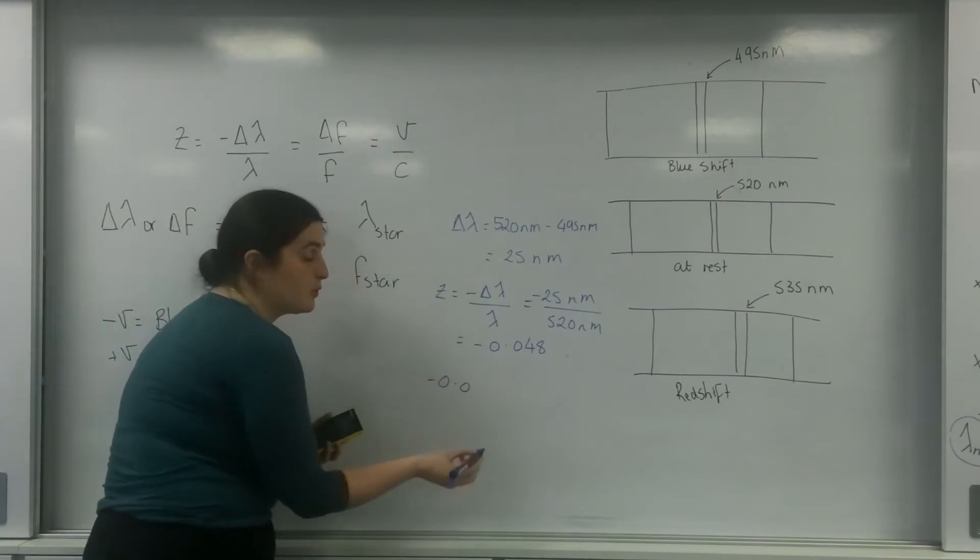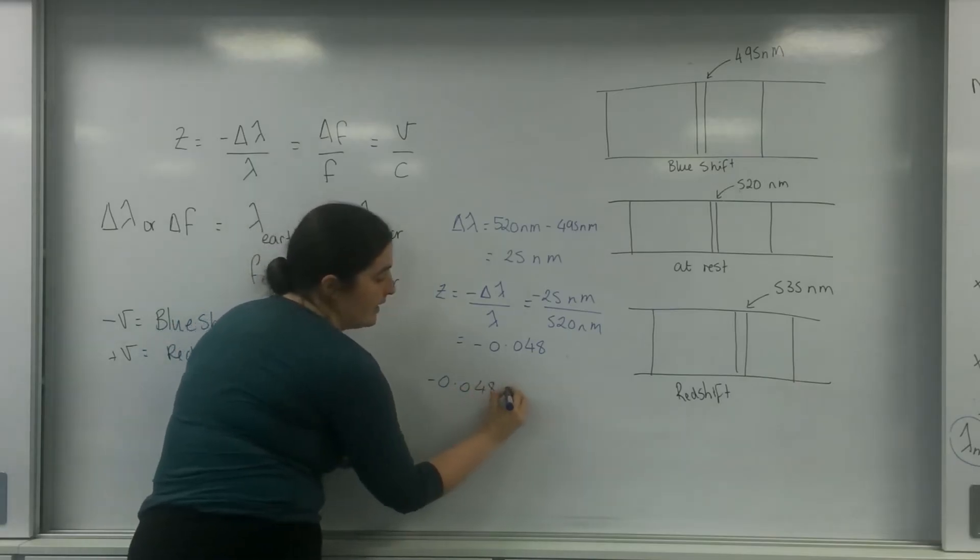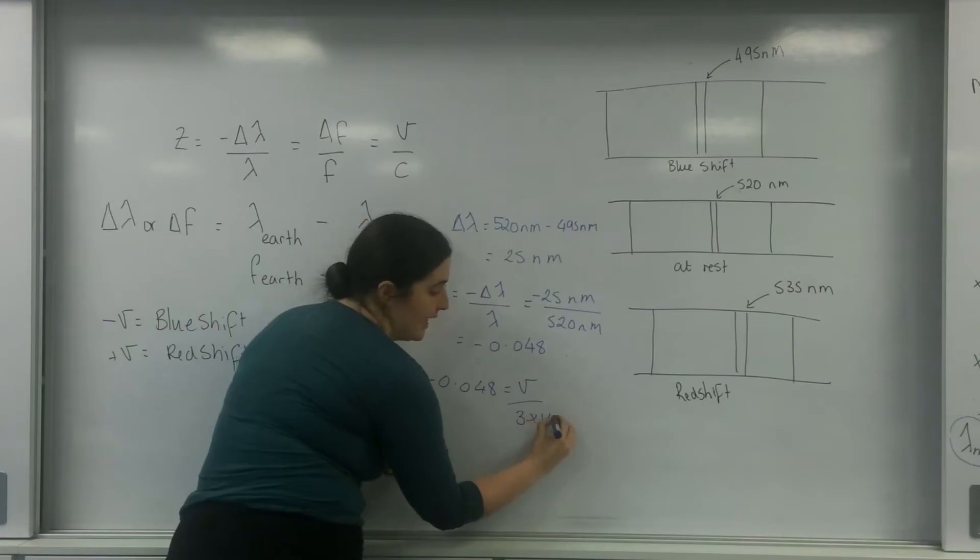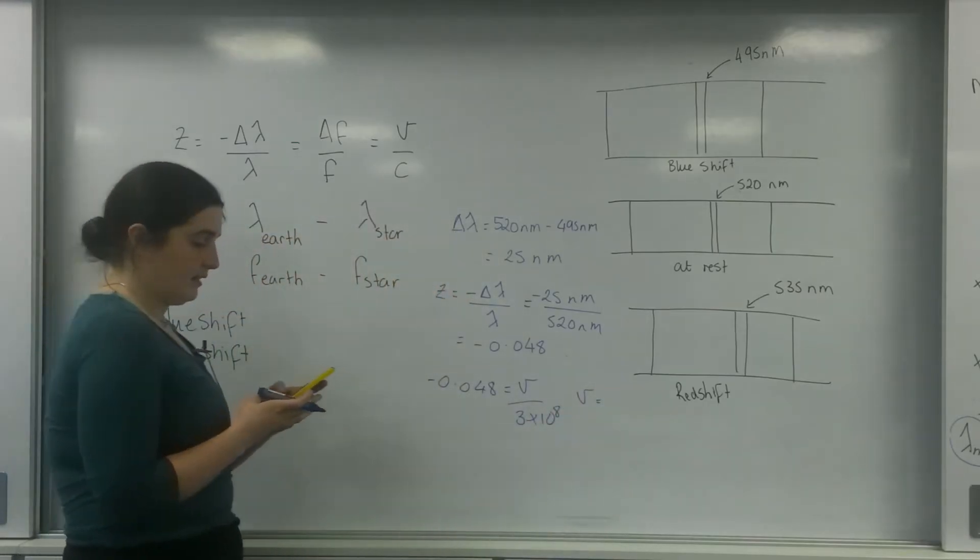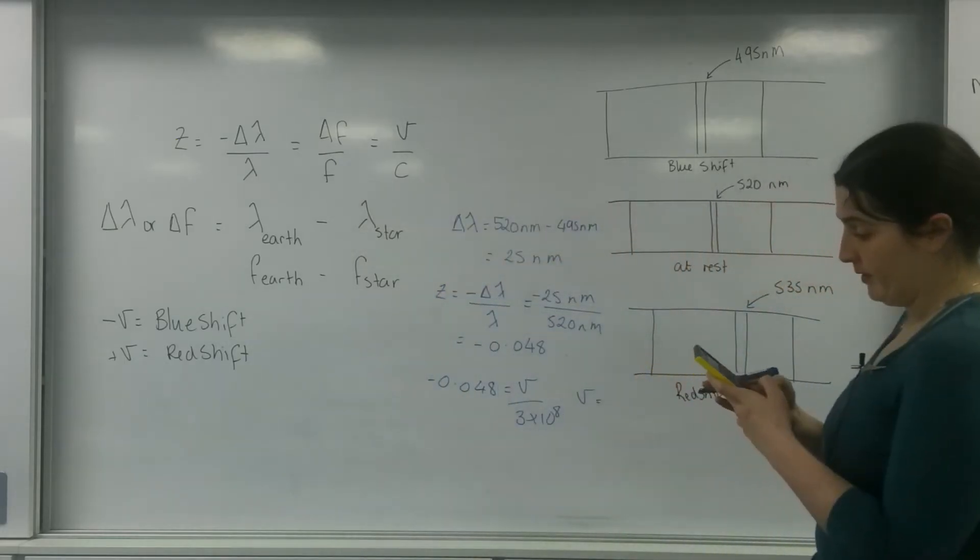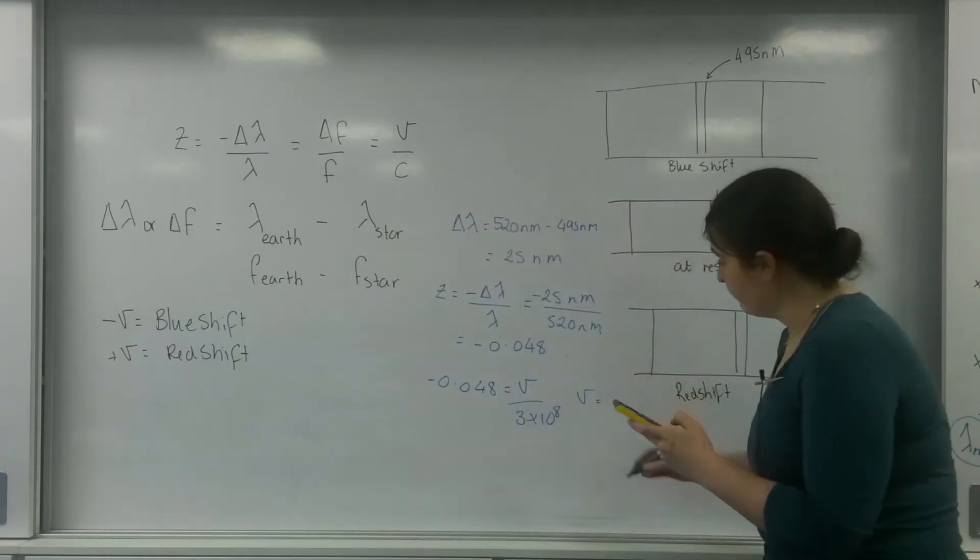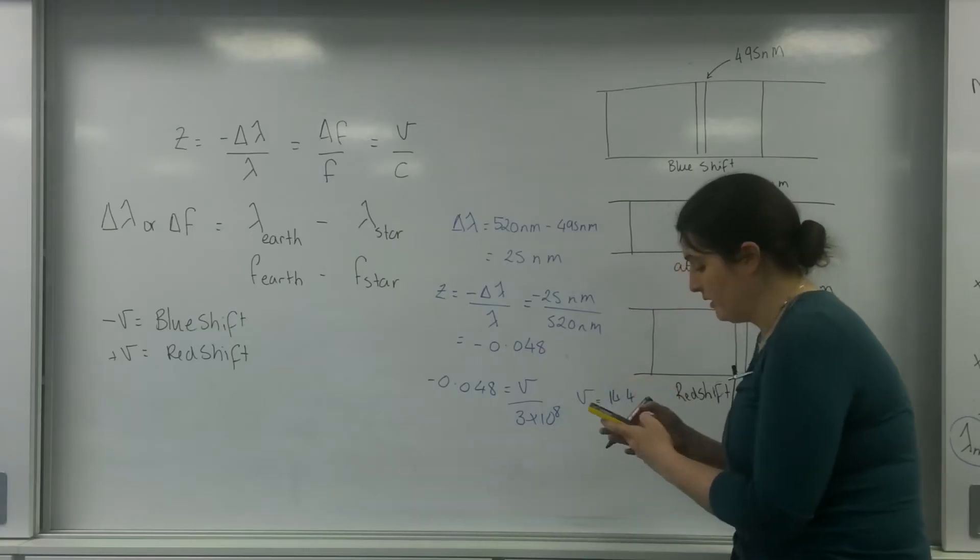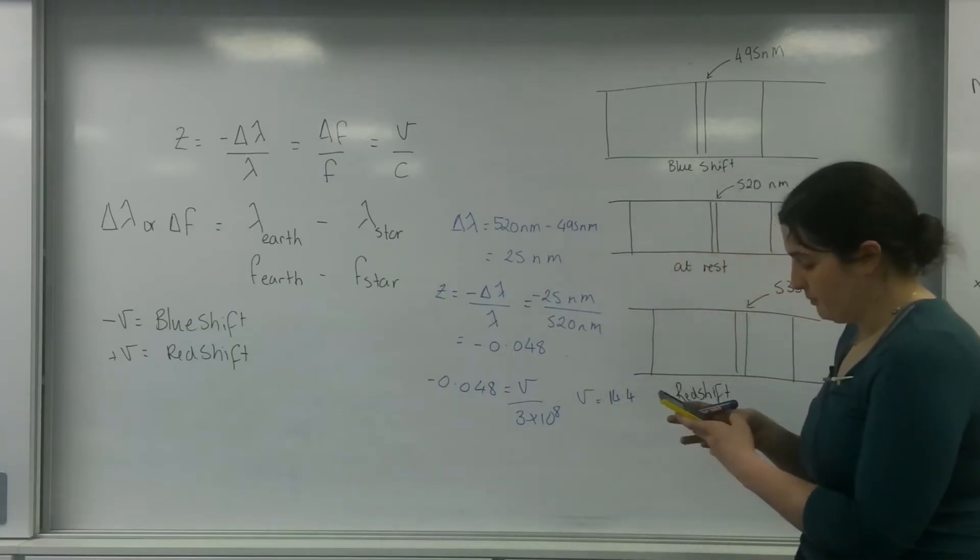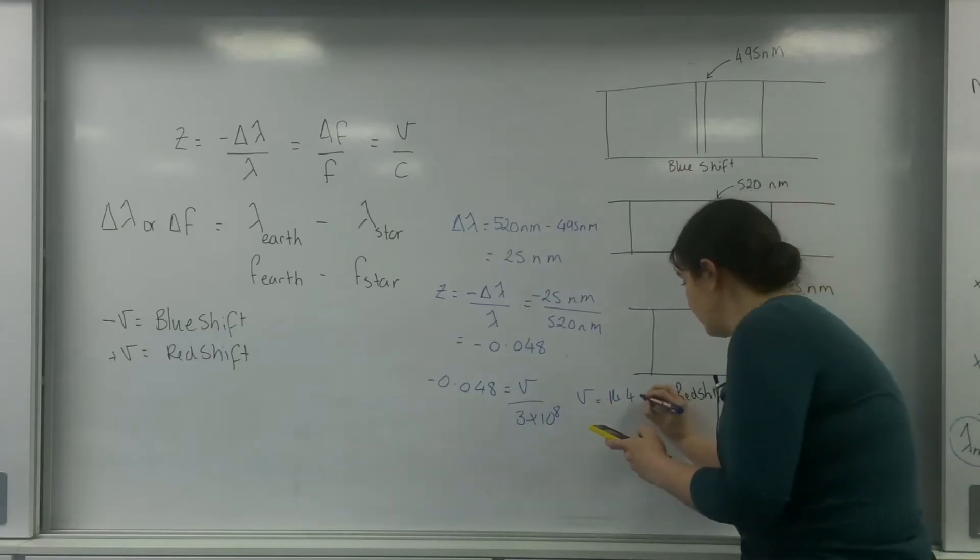So minus 0.048 is the velocity over C, which is 3 times 10 to the 8. So my velocity is going to be 14.4 times 10 to the 6 meters per second.